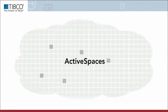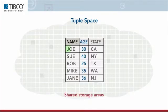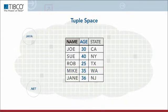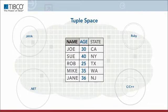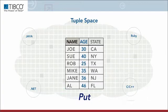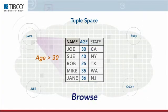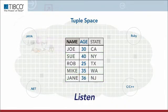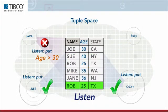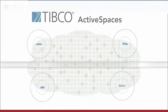Active Spaces is based on the concept of Tuple Spaces — shared storage areas for collections of relational database rows. Active Spaces provides coordination and communication, which enables unrelated programs and processes to get, put, take, browse, and listen from collective Tuple Spaces across platforms and architectures.